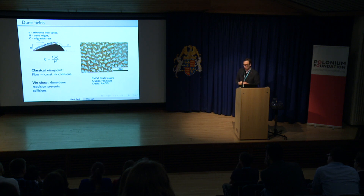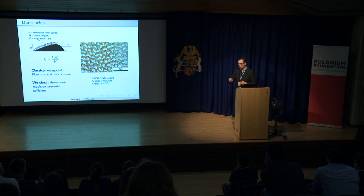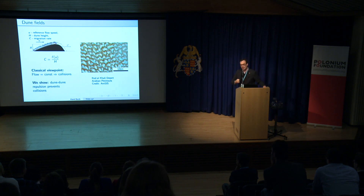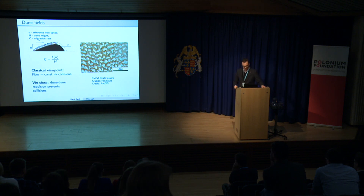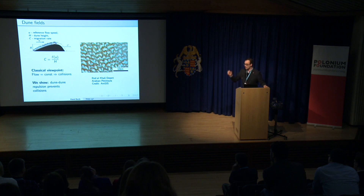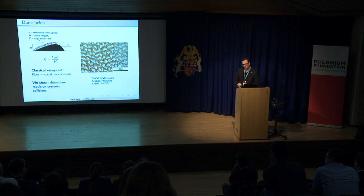If cars obeyed that relationship, I would actively discourage you from driving, because it would mean that small cars always bump into big ones. Fortunately, we've got some sort of feedback mechanism whereby drivers can adjust their speed based on visual input, and surprisingly, dunes may have something similar. That's precisely what I'd like to talk about today: the repulsion mechanism between dunes which can prevent collisions.